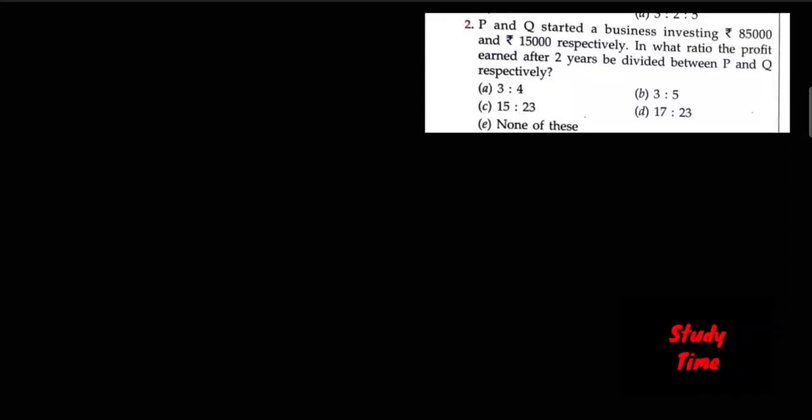Question number two: P and Q started a business investing 85,000 and 15,000 respectively. In what ratio will the profit earned after two years be divided between P and Q respectively? So P is to Q, 85,000 to 15,000.